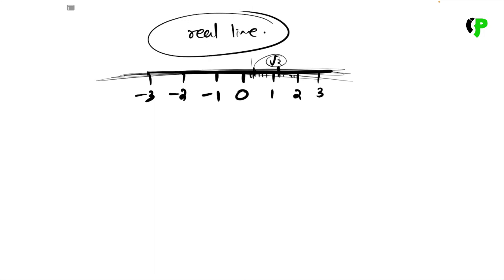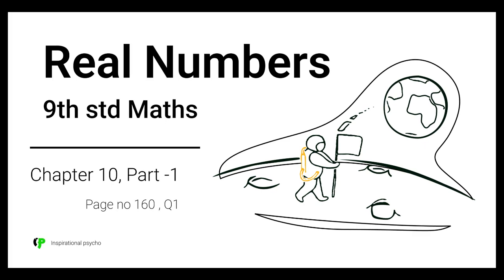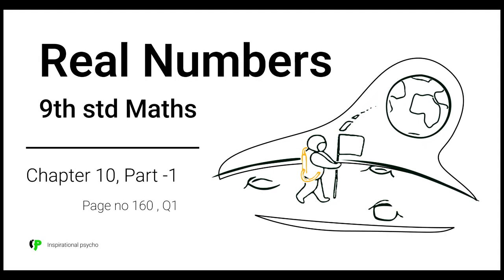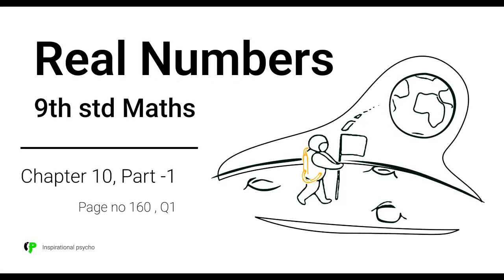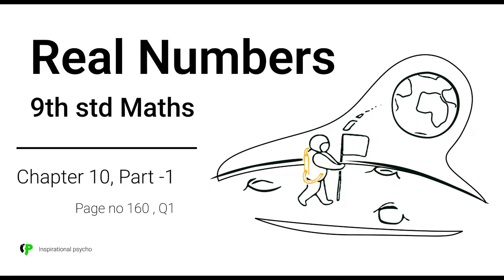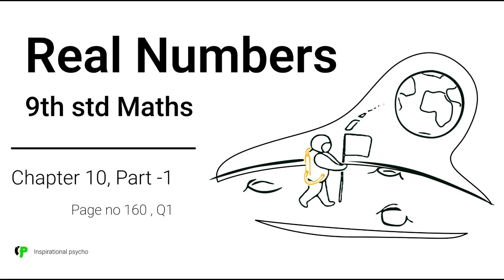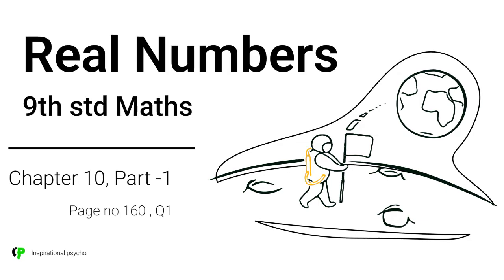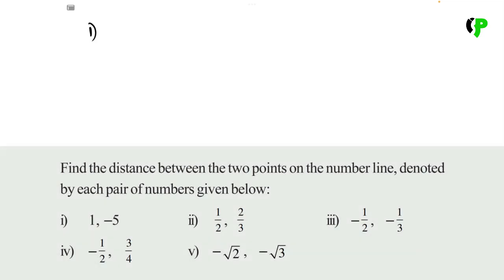It's a simple chapter. You can ask questions and go into a few details. Let's explain the first question. The question is: find the distance between two points on the number line denoted by each pair of numbers given below. The first question is 1 and -5.